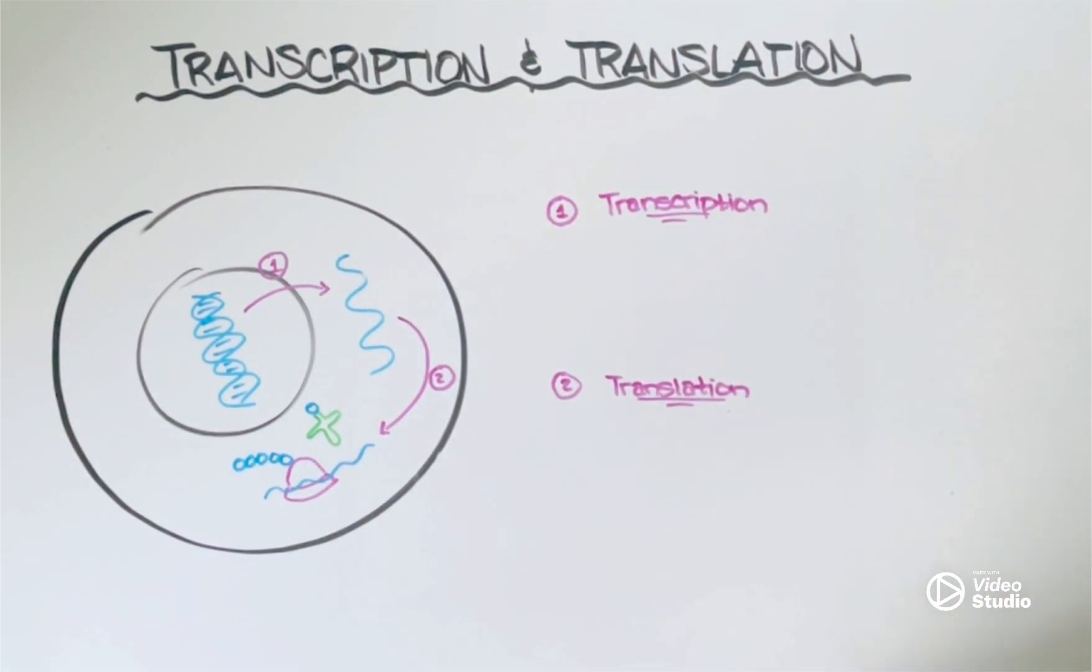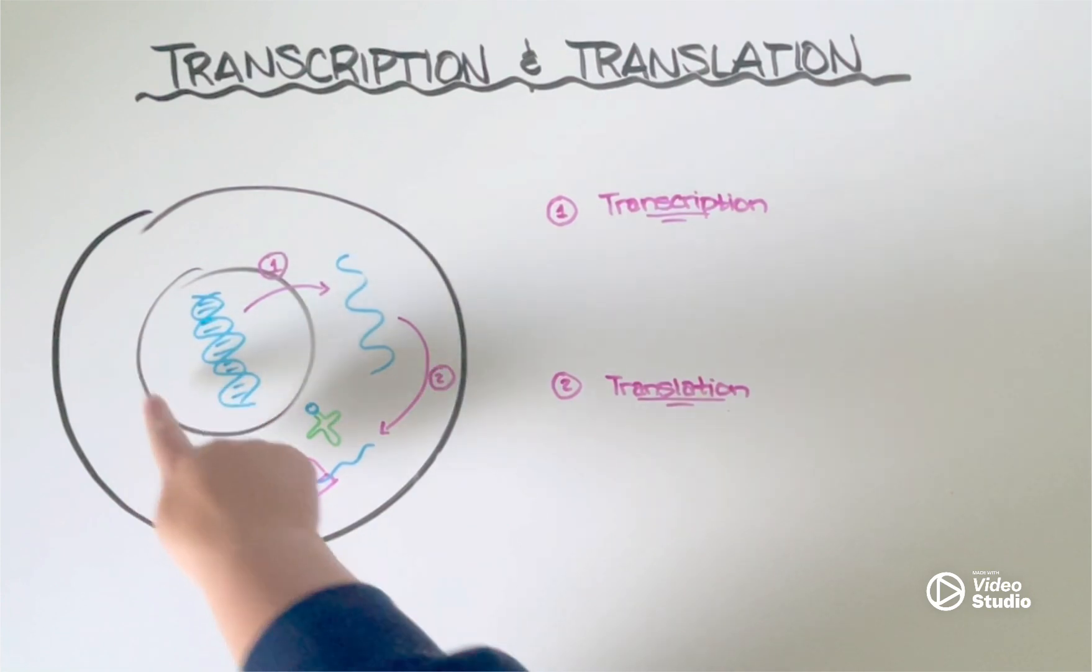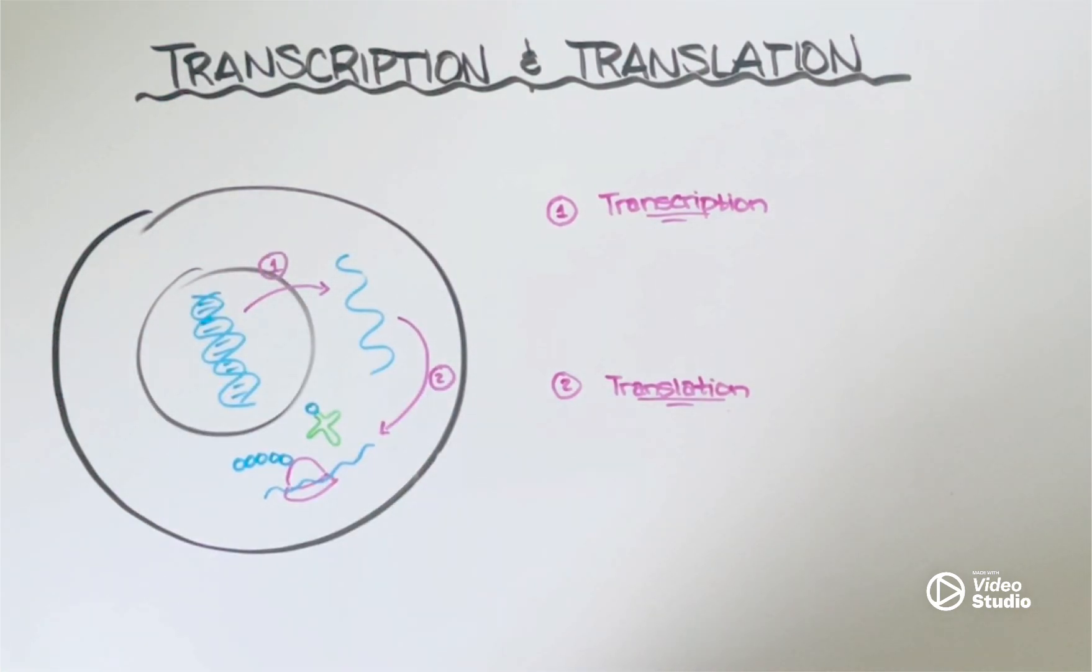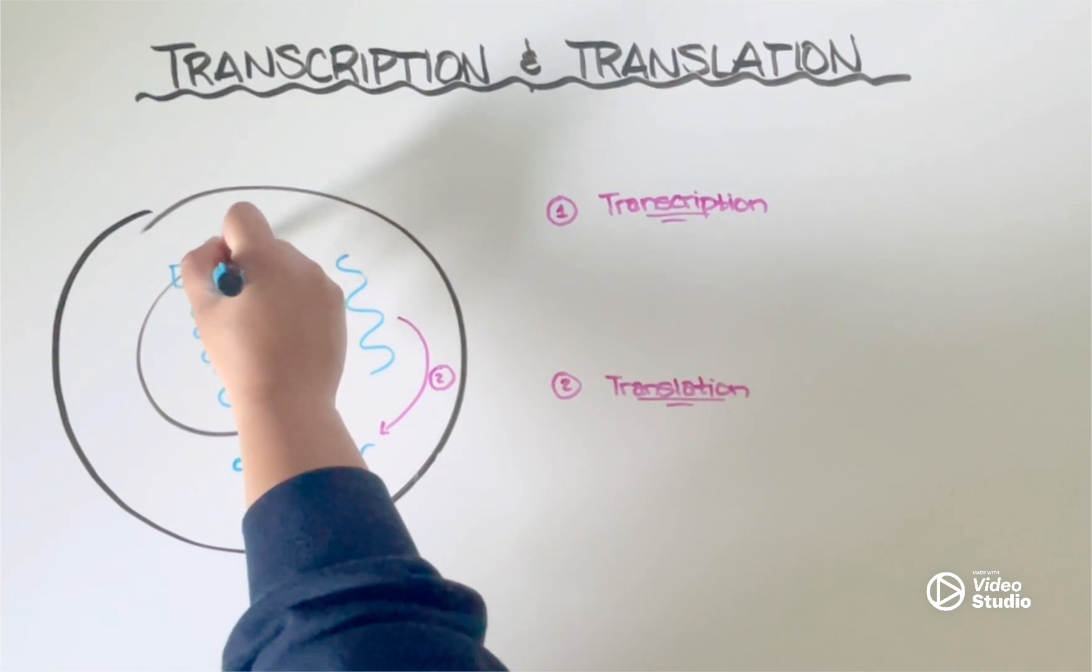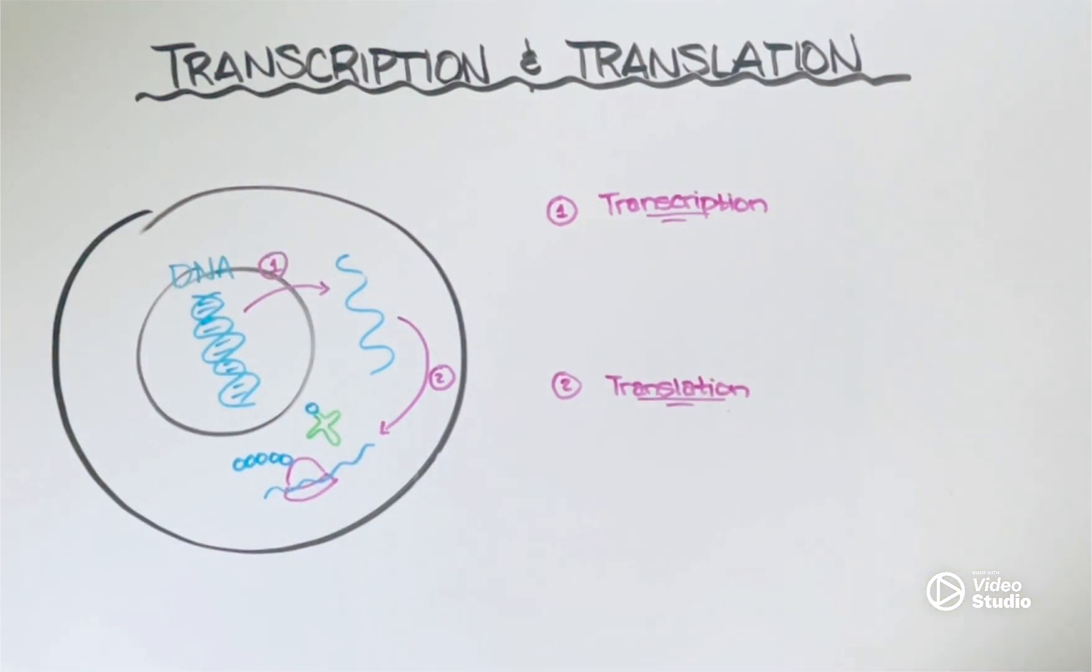So just as a quick recap, we know that inside the nucleus of every one of our cells is this molecule known as DNA. And often we say that DNA is the instructions or the blueprints for our cells, but what does that even mean?